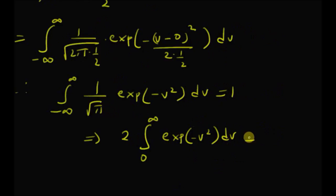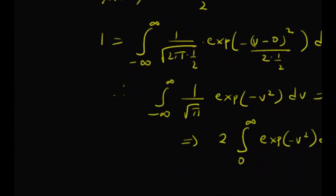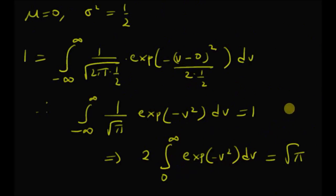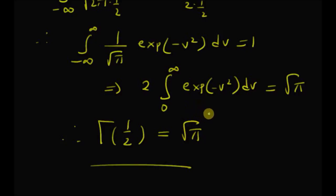That is the integral we have here: 2 times the integral from 0 to infinity of e^(-v²) dv, which is exactly the same as the integral we arrived at, and it equals √π. Therefore, Γ(1/2) = √π. Thus, by using the area of a Gaussian PDF, we can determine the value of the gamma function at 1/2 as √π. Thanks for watching.